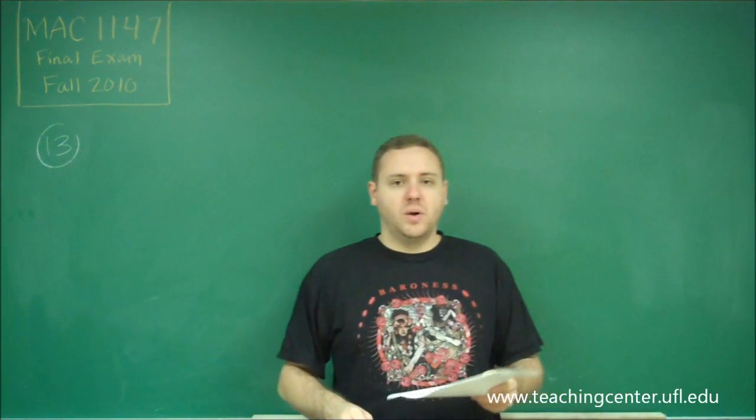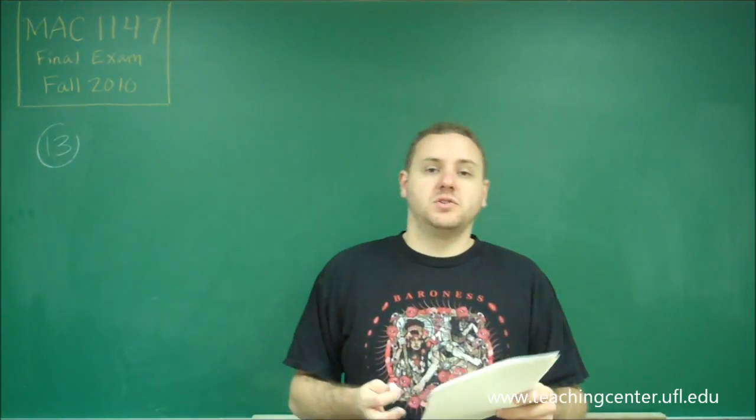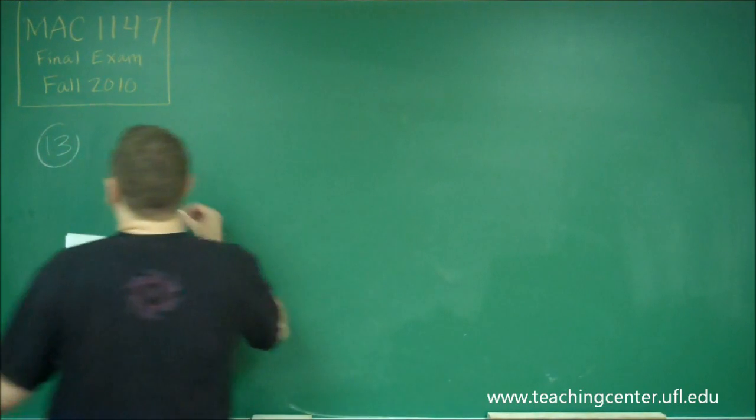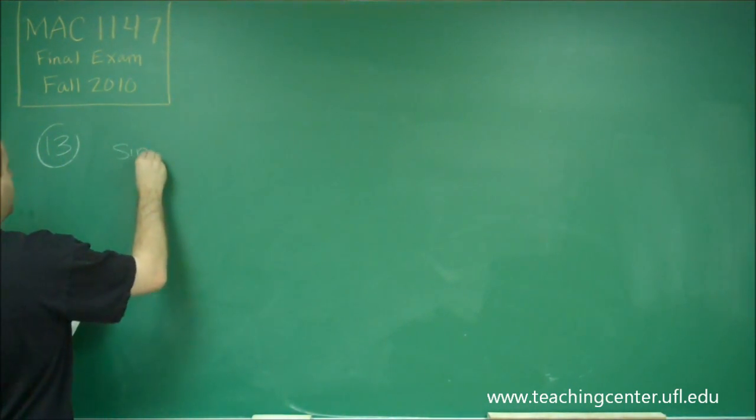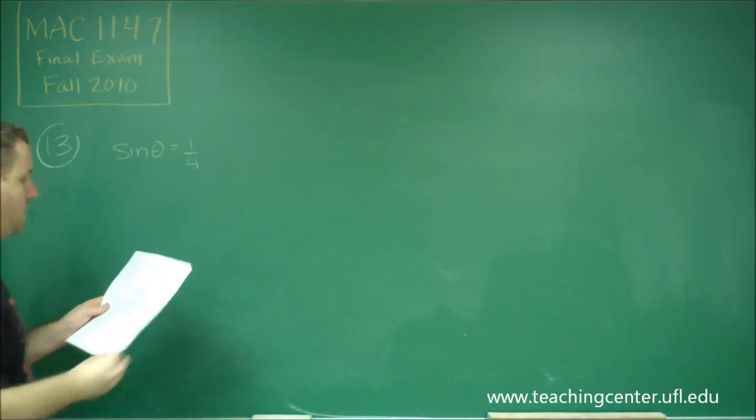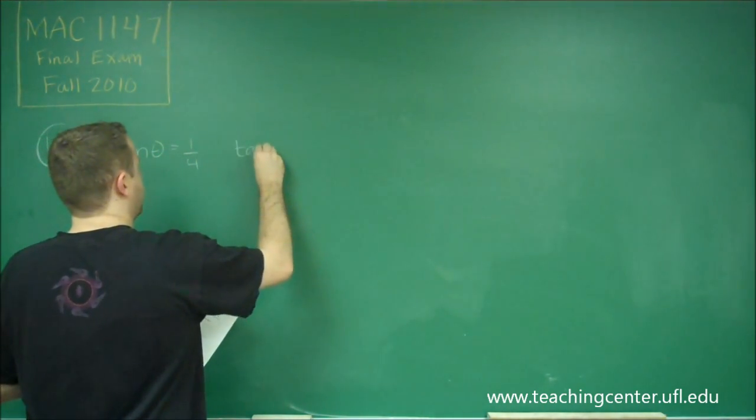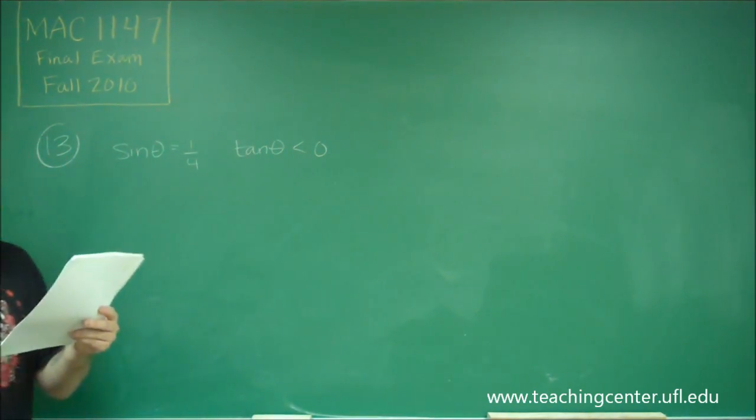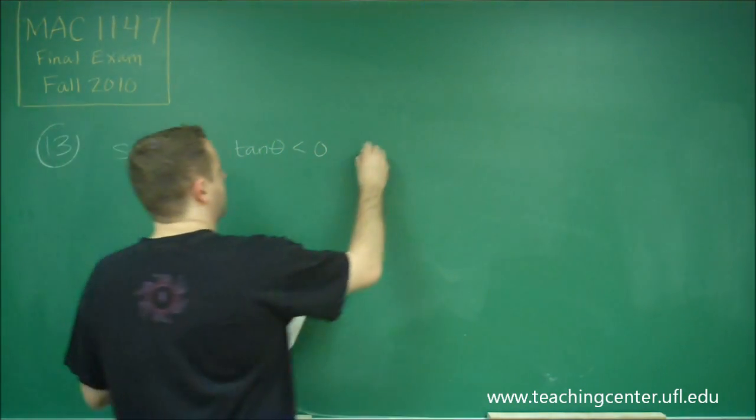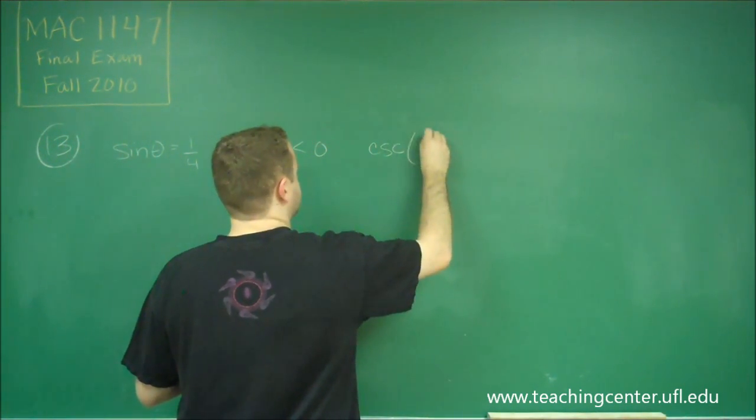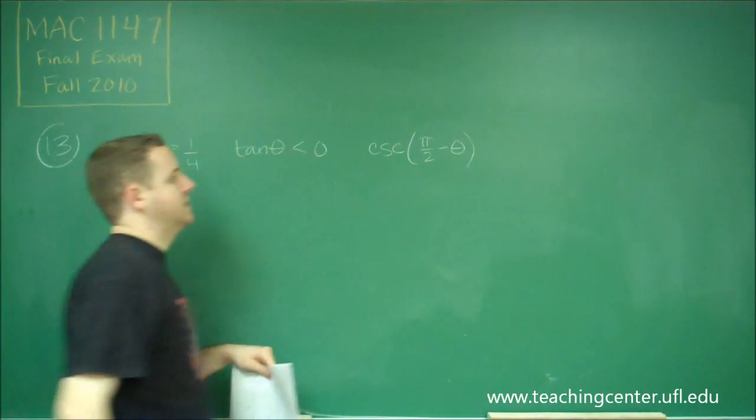Alright, for number 13, we have a trig question, and we have a lot of pieces of information that we need to use before we can answer this question. What we have is sine theta equals one-fourth, we know that tangent of theta is negative, and we're asked for what is cosecant of pi over 2 minus theta.